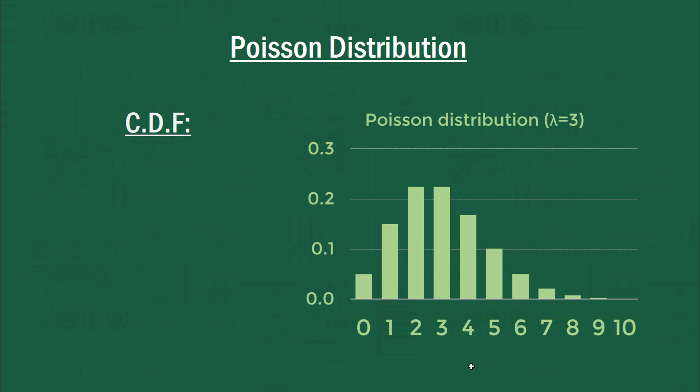All right. So let's talk about the CDF now, the cumulative distribution function. Now that's not the height of a certain individual discrete outcome. That is the cumulative distribution. So all of the heights put together up until that point.